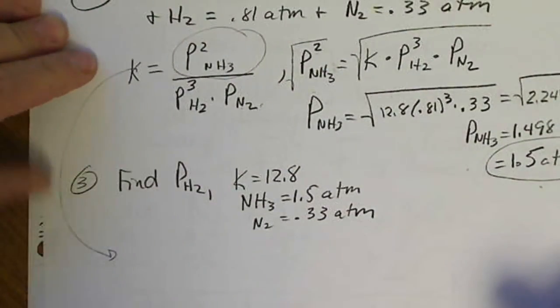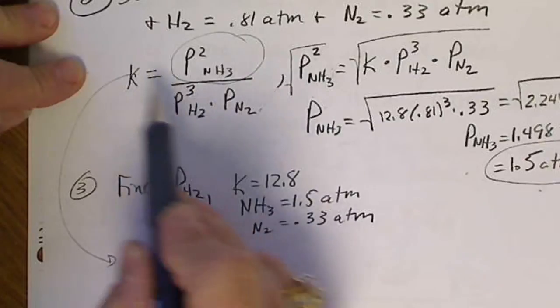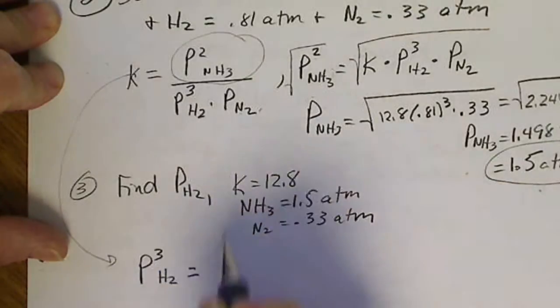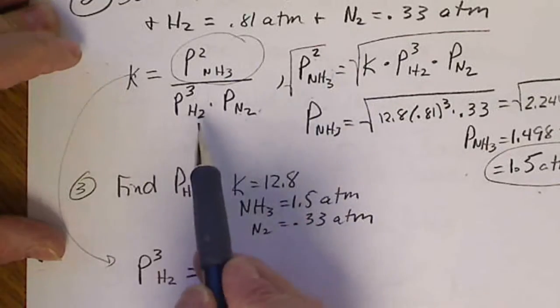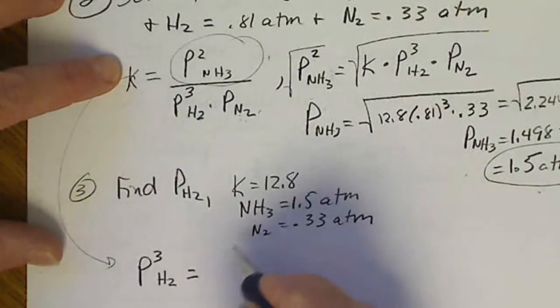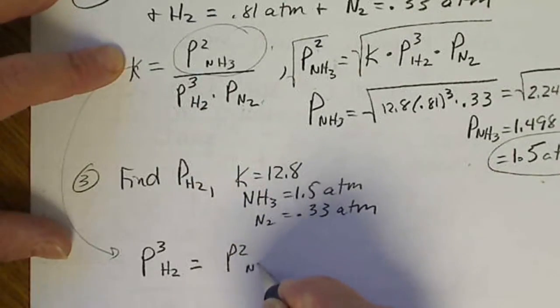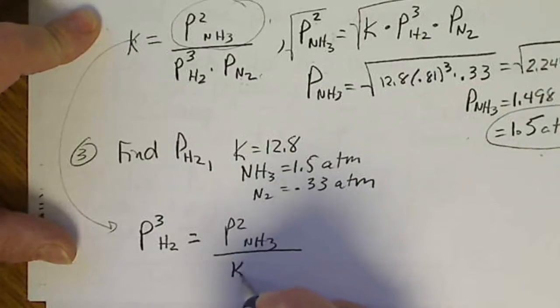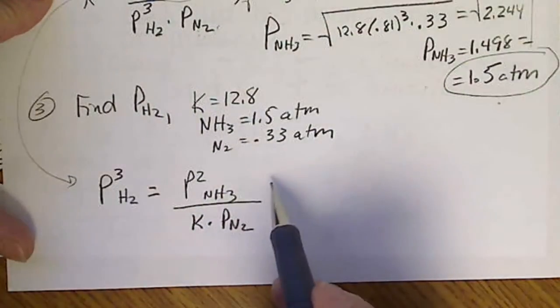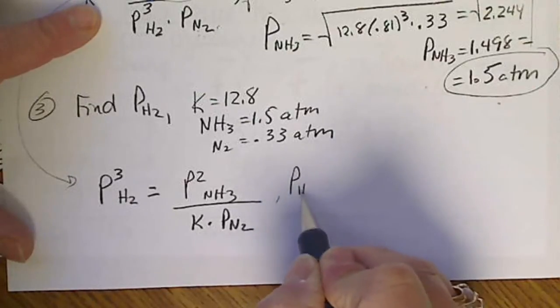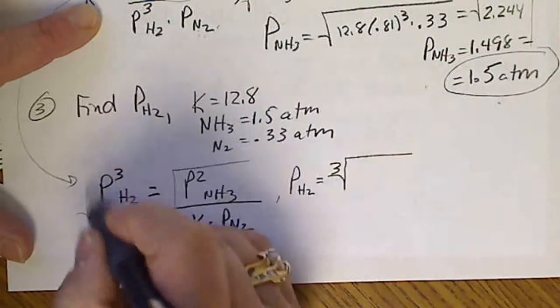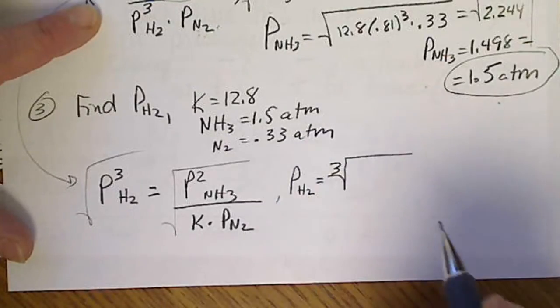So from the expression here, I'm just going to bring this down here instead of rewriting it again. I need my unknown in the numerator. So if I put this over here, so the pressure cubed of H2, and then I'm going to put the K down here. So it's the same thing as multiplying both sides of the equation by this unknown that we're looking for, and dividing both sides of the equation by K. I'm just going to do that in one step. Now my K is in the denominator, and my pressure of nitrogen stays there. Now I have to do the cube root of this, so my pressure of hydrogen is going to be the cube root of everything that's in here.